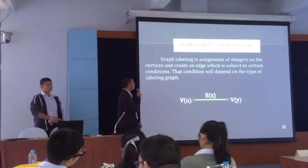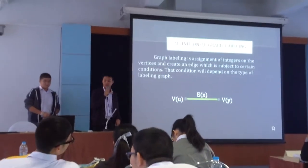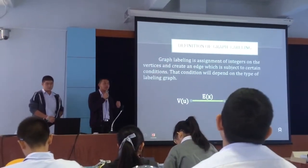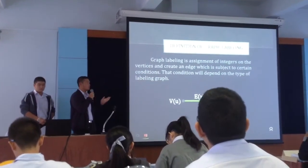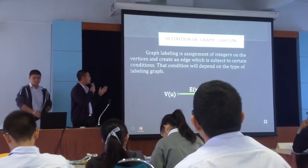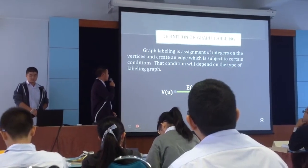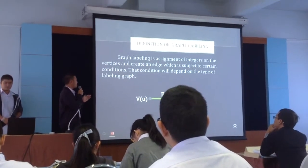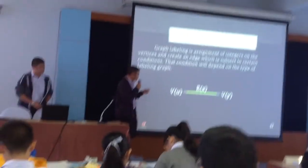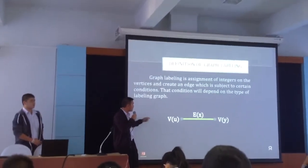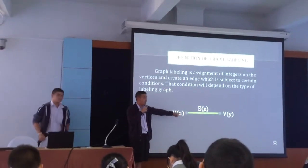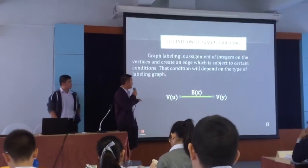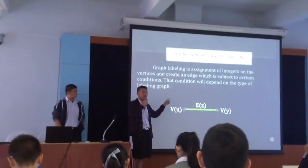Definition of graph labeling: graph labeling is an assignment of distinct integers to the vertices. And here is the edge with the objective to satisfy certain conditions. That condition depends on the type of labeling graph. Like this example, we have the edges VU and VY, and in some conditions, we can find the edge label.